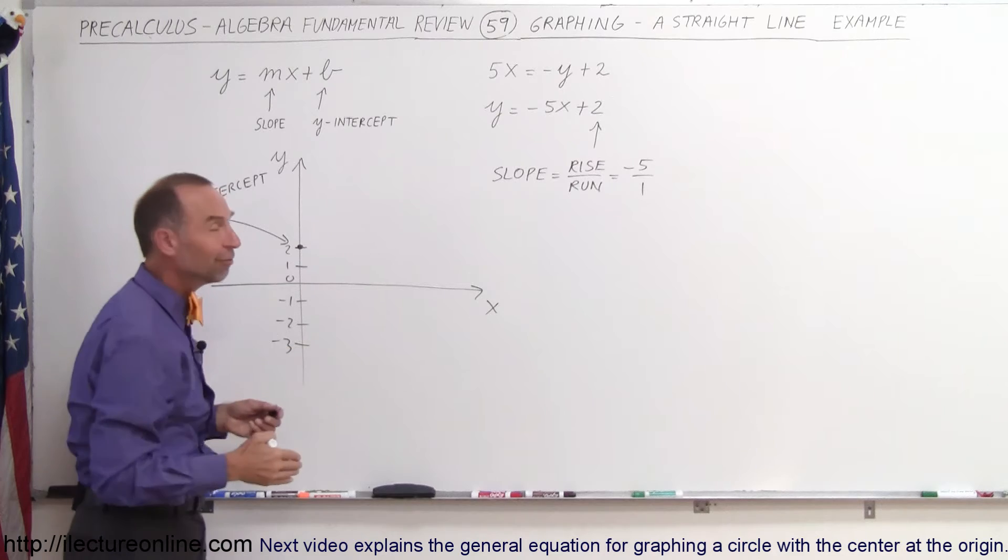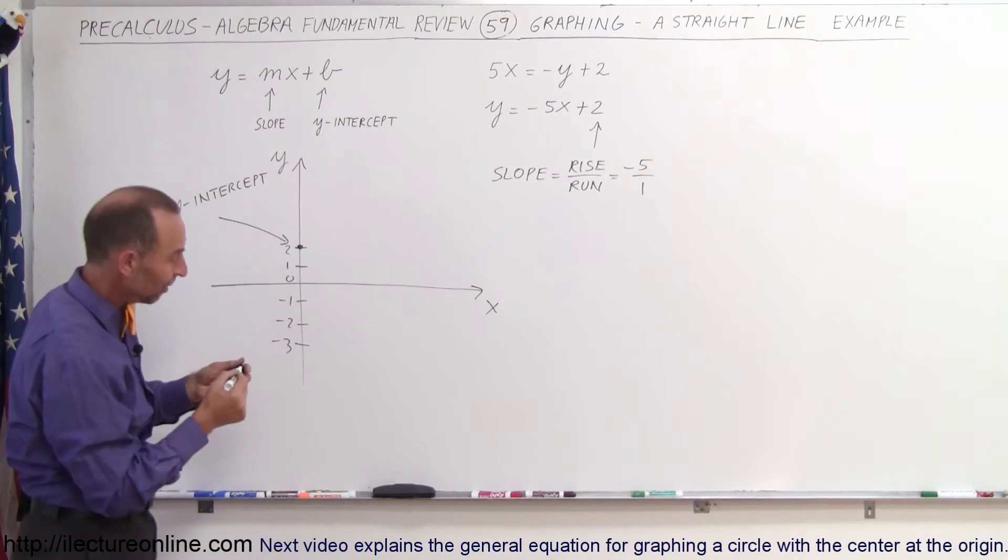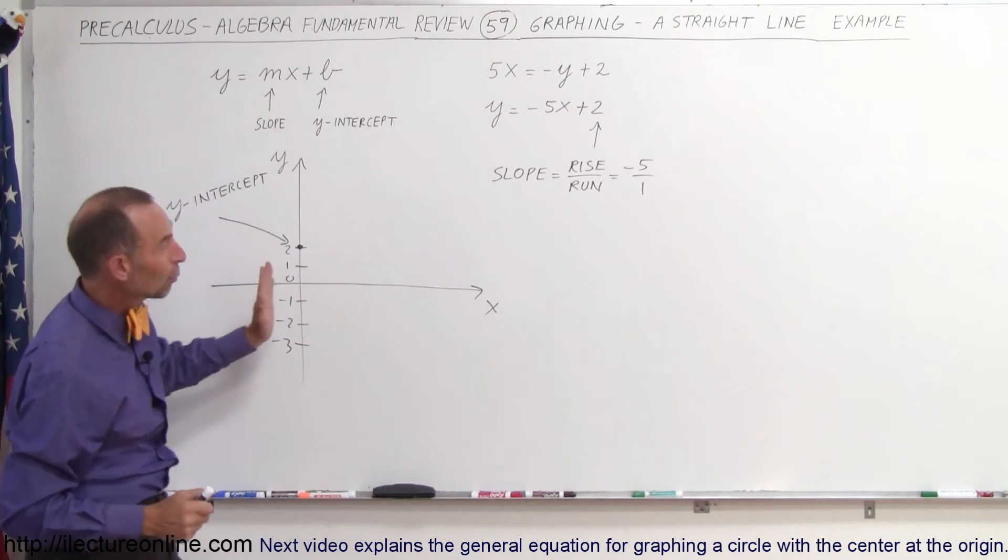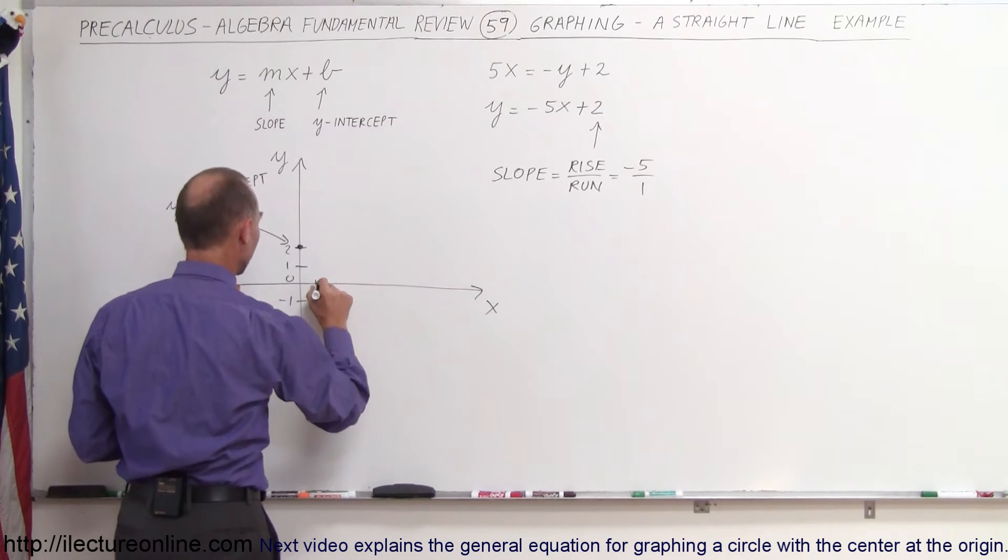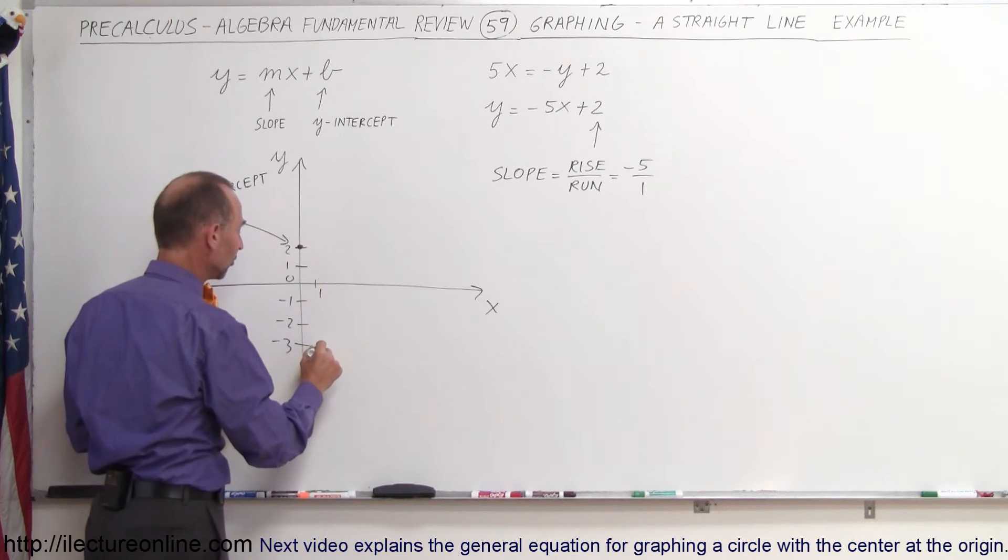So when we drop 5, or fall 5, we're down at negative 3, and then we run 1, we go 1 to the right. So 1 to the right, which is right there, that's x equals 1, and there's our second point.